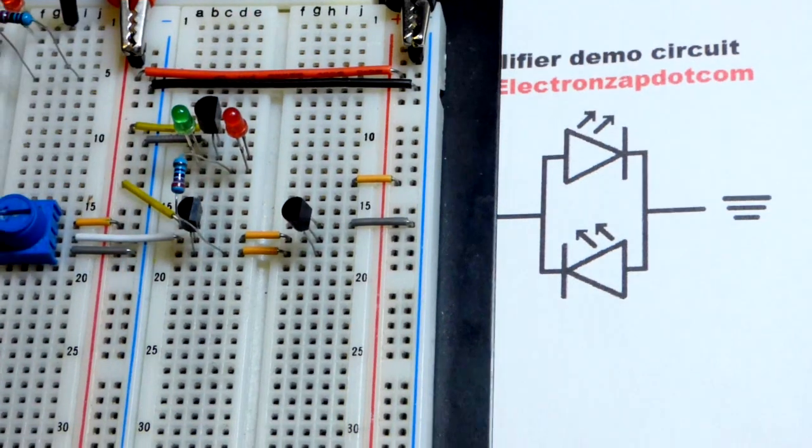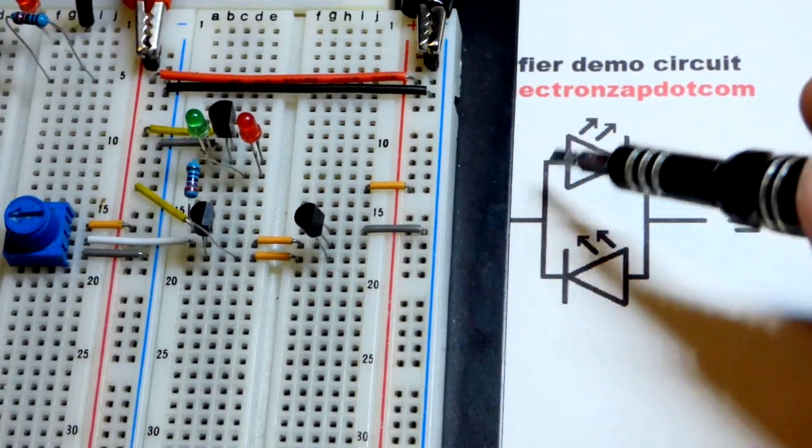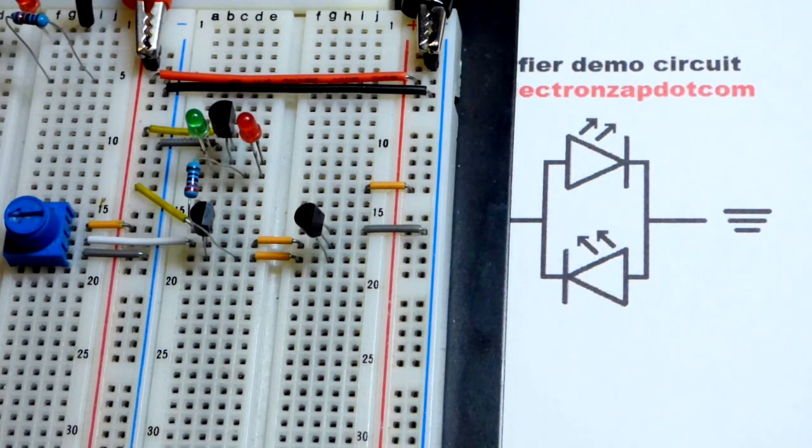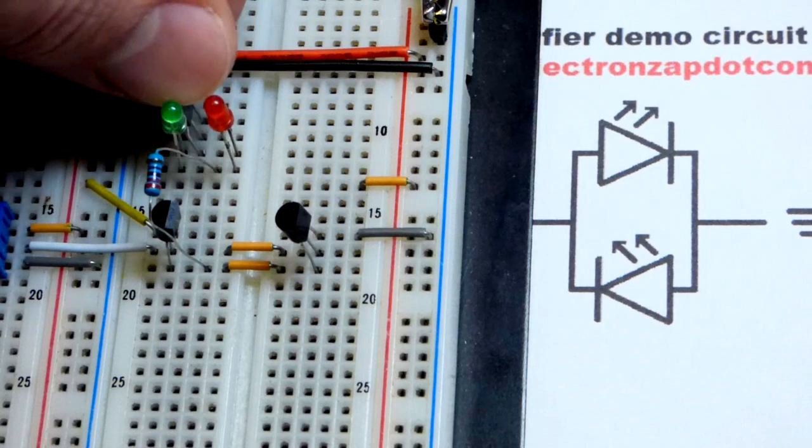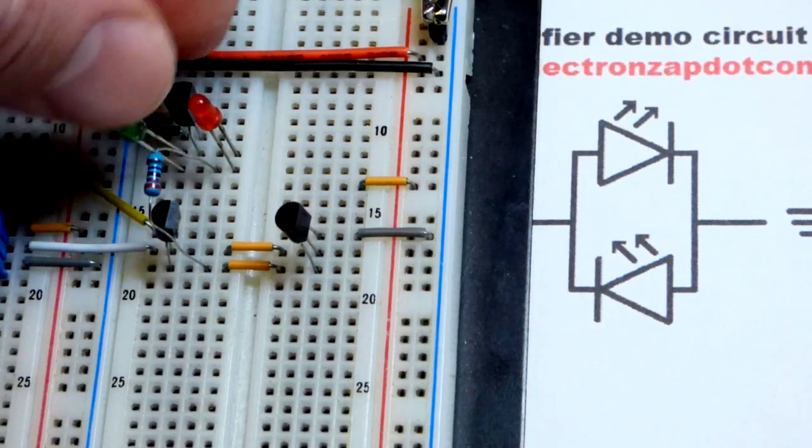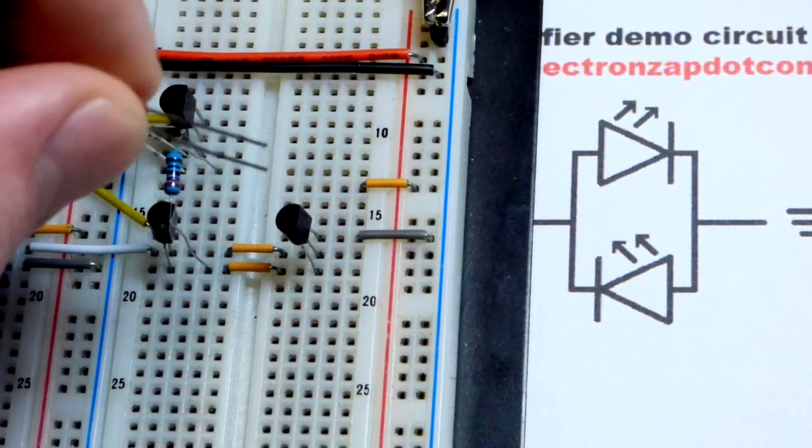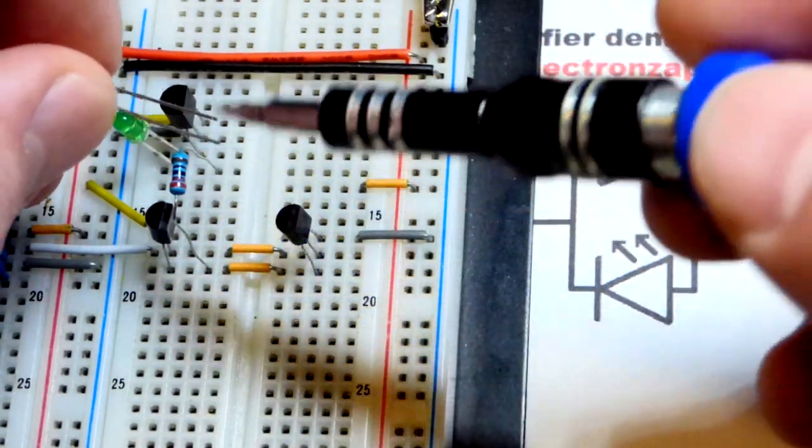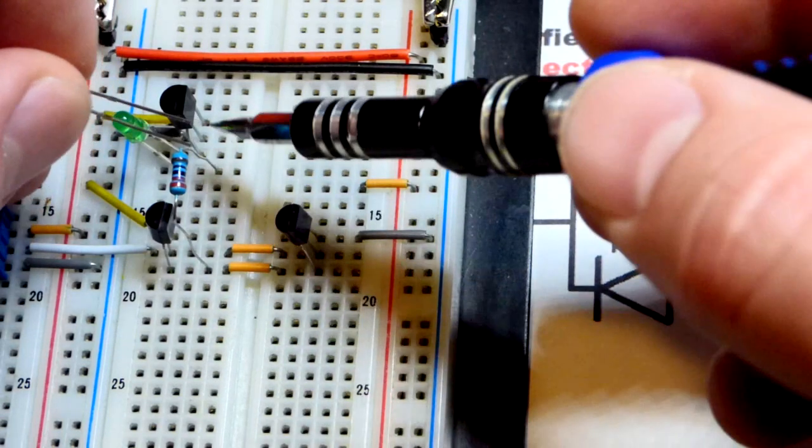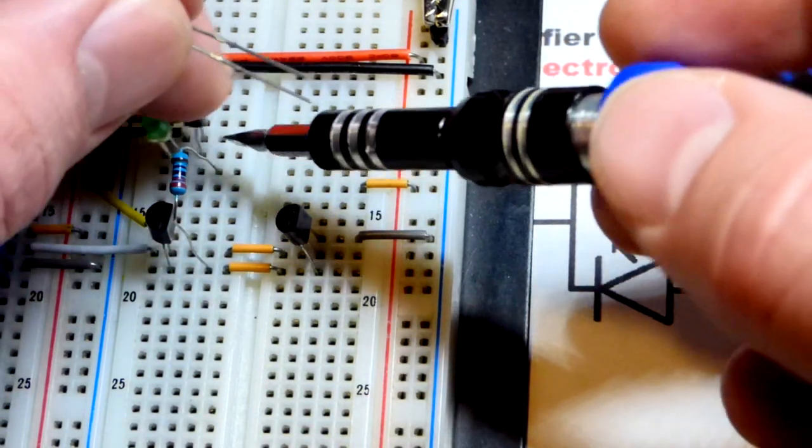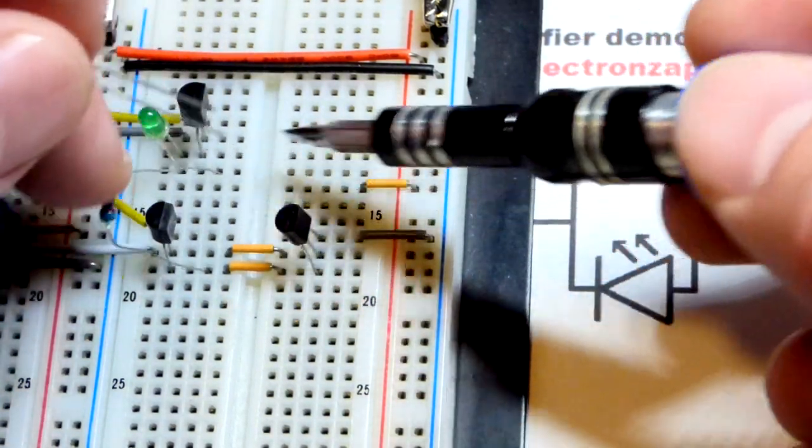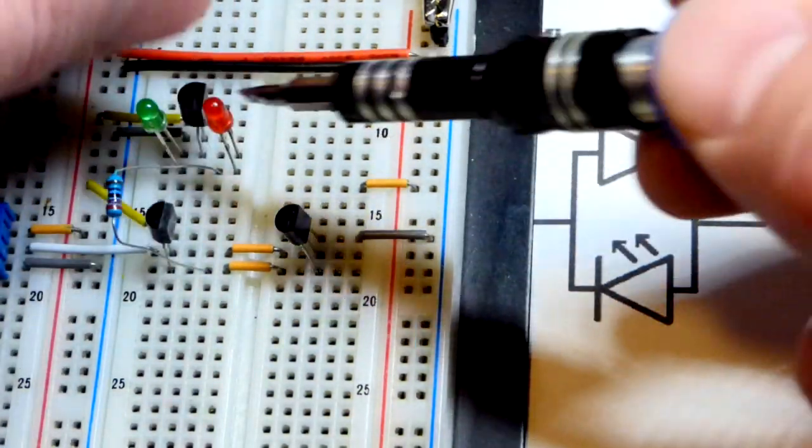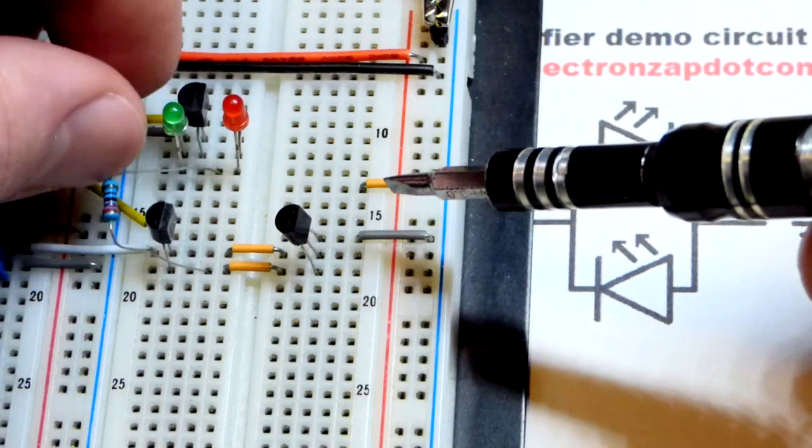Now I want the red LED for whatever reason to light up when the output is more positive than ground. So we have the TLE 2426 up here, our virtual ground. We looked at it in earlier videos. Not going to go over that too much but you can see the longer lead comes to the resistor and that heads towards the transistors. The shorter lead to the virtual ground up there.